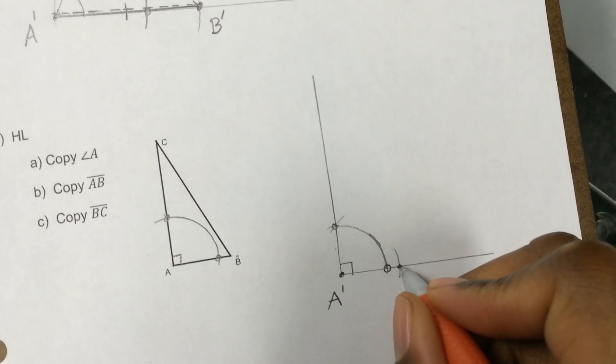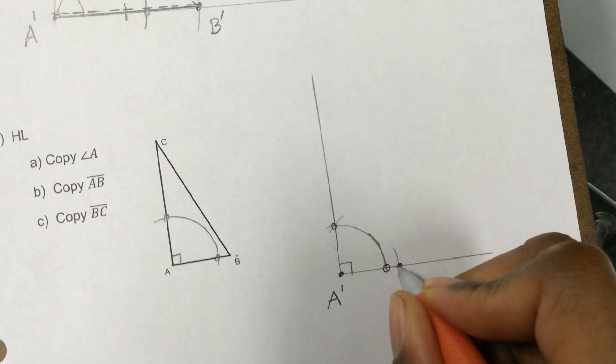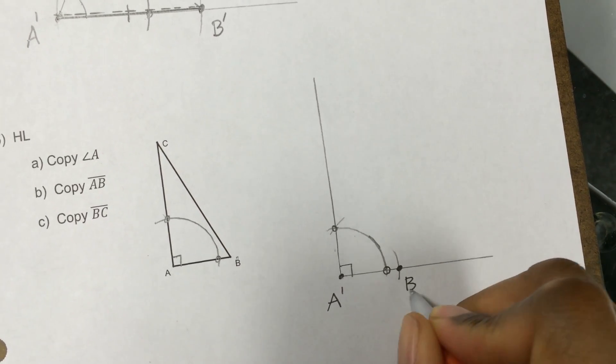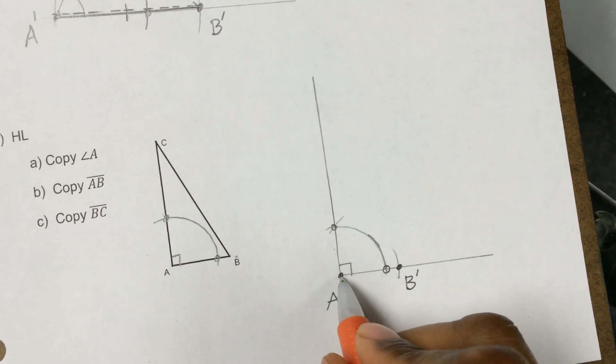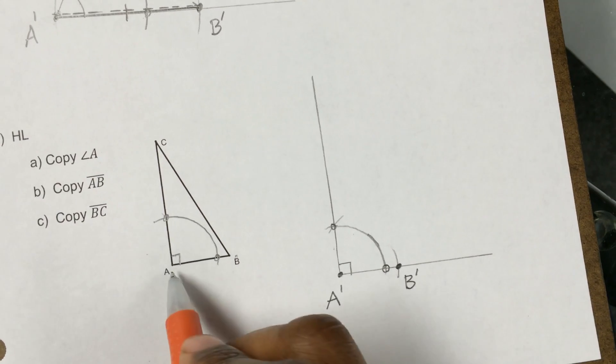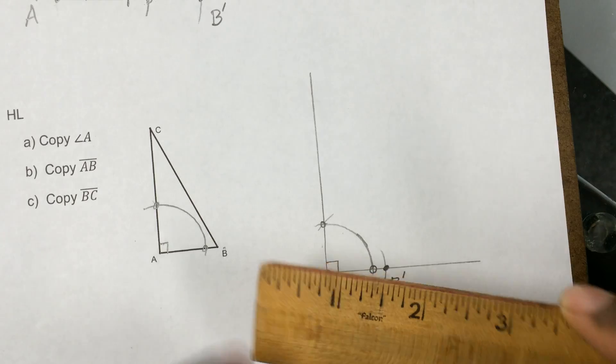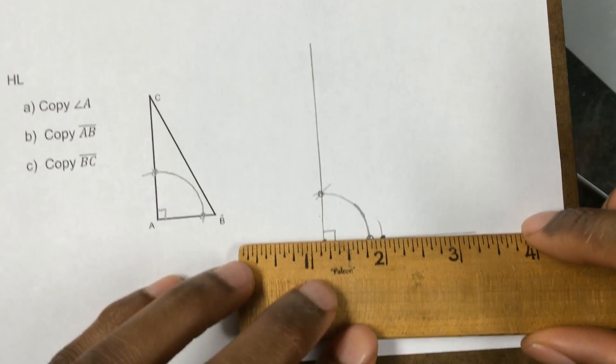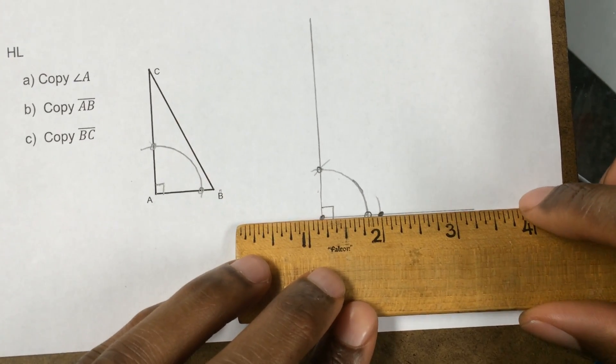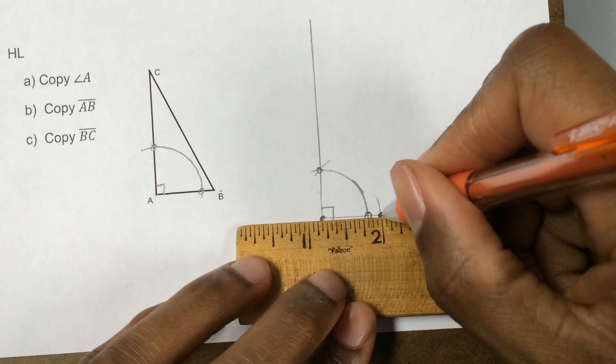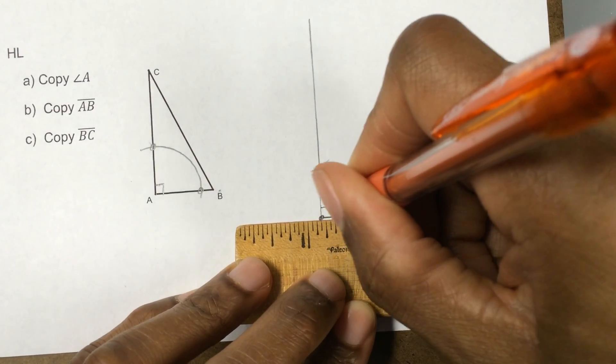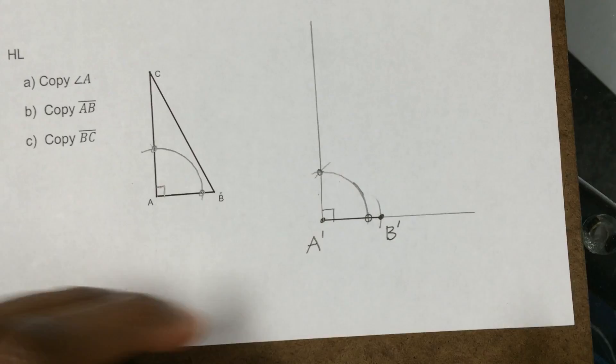OK, so that intersection shows me where my new point B is going to be. And of course, we'll call it B prime. Now that shows us one of the sides of this triangle. So I can go ahead and darken that in right now.